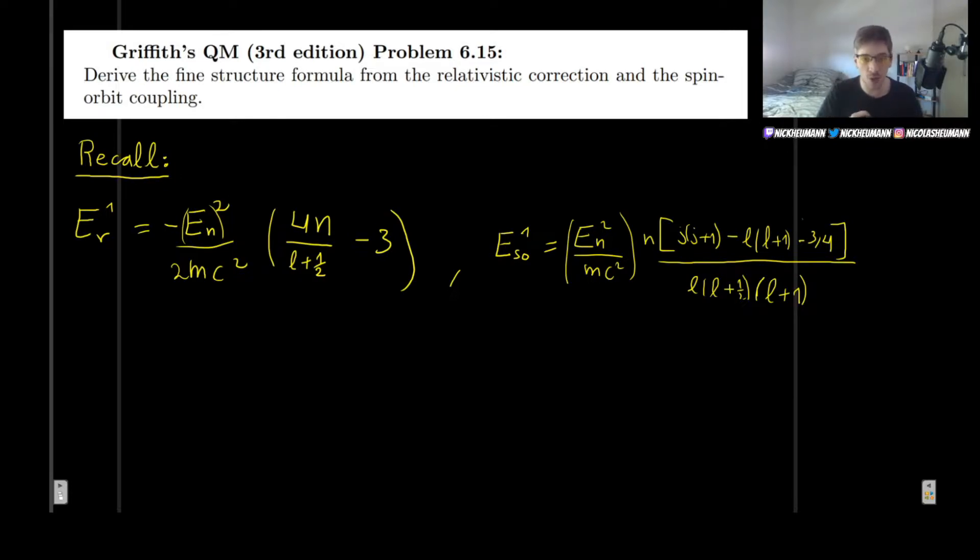Now these two formulas we already found in previous videos. So the one for the relativistic correction is this one over here, and the one for the spin-orbit coupling is this one. There are just slight differences from the formulas we saw.